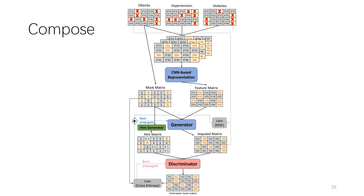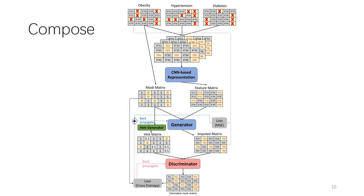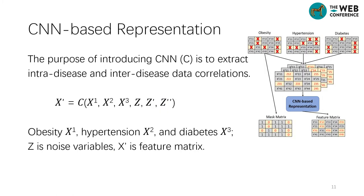CPH contains three components. The first is a convolutional neural network (CNN) based representation. Unlike the traditional generative adversarial network, it contains a generator and discriminator. The purpose of introducing CNN is to extract intra-disease and inter-disease data correlations. First, the missing entries of each chronic disease matrix are initialized with different noise variables Z, obtained by sampling from either a normal or uniform distribution. Then, we regard the three chronic disease matrices as an image with three channels, where the two dimensions represent time and space, and the number of channels indicates the different types of diseases. Finally, this image is fed into the CNN-based representation, as shown in the picture, to get a feature matrix X prime.